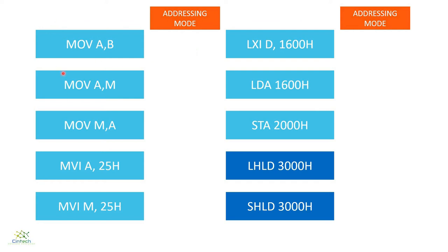So let's check what addressing modes all of these instructions have, one by one. In the case of the first instruction, the operand — the data — is present in B, and that has to be copied into the A register. So the data is present in some sort of register. This particular instruction therefore has an addressing mode called register mode of addressing.